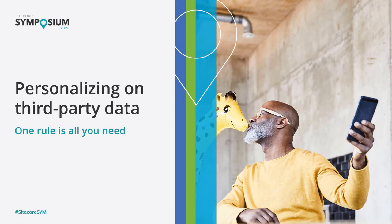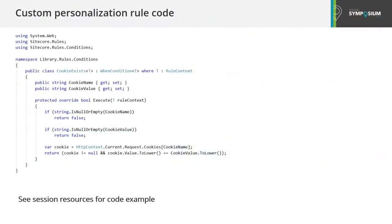This next section is aimed at developers implementing custom personalization rules. Here's the code for the custom personalization rule that personalizes on a cookie. The code is very simple and flexible and is not specific to Kickfire or any other third-party service — you can use this rule for any cookie. The rule simply looks for the specified cookie and checks whether the value matches the specified value. We can alternately use XDB instead of cookies, and I'll show that code shortly. This code example is also provided in the session resources.